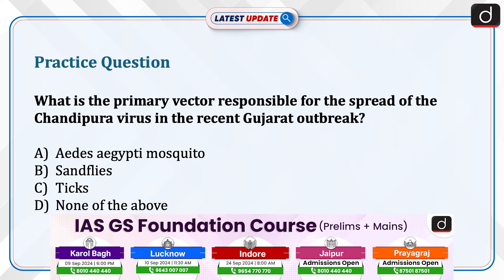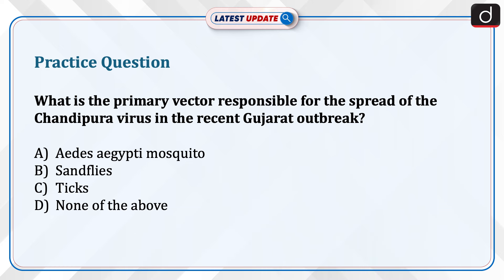Now it is time for a practice question. What is the primary vector responsible for the spread of the Chandipura virus in the recent Gujarat outbreak? Options: Aedes aegypti mosquito, sand flies, ticks, or none of the above? Send the answer to this question in the comment section.